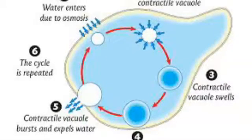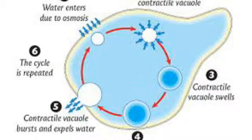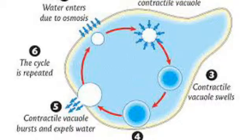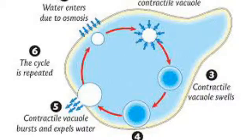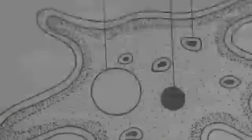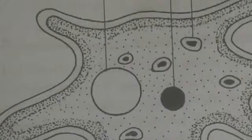Osmoregulation is accomplished by the removal of excess water from the body with the help of contractile vacuoles. The vacuoles collect excess water, swell to maximum size, move to the periphery, and suddenly contract. This causes the contractile vacuole to collapse, pumping out its contents. A new vacuole is then formed. The phase of enlargement is called diastole and the phase of contraction is called systole.